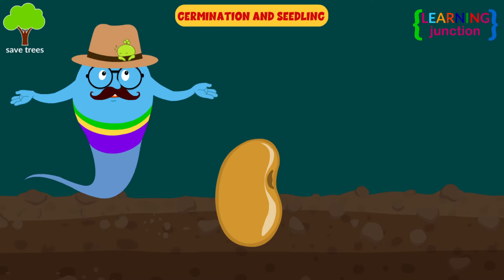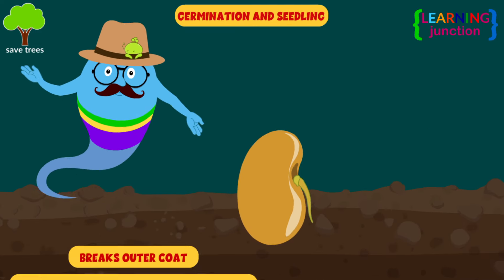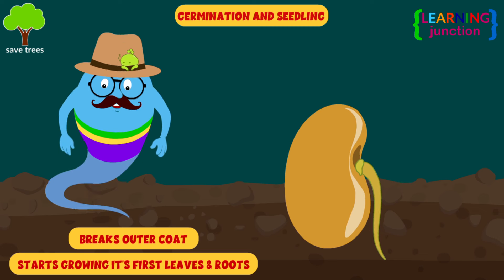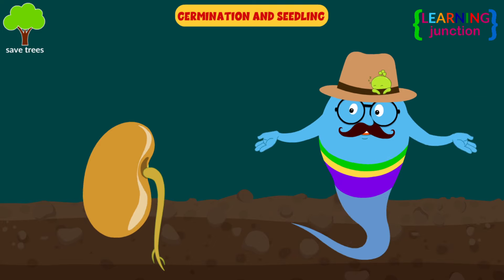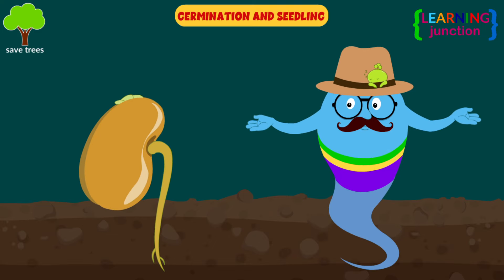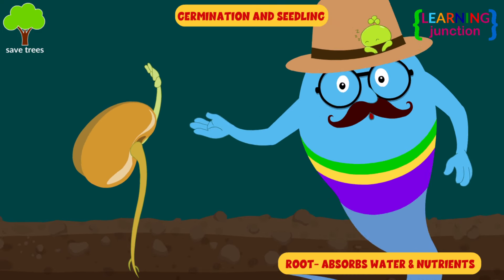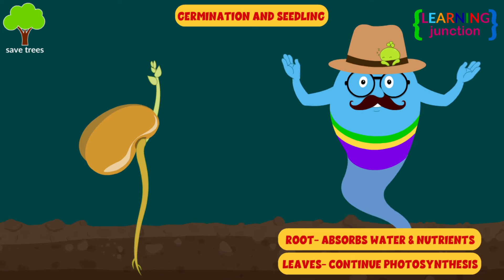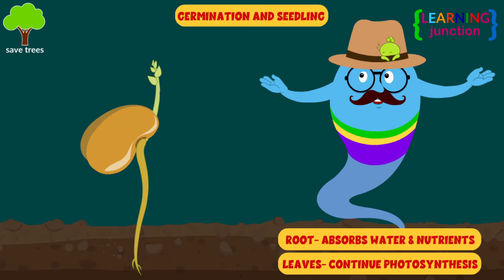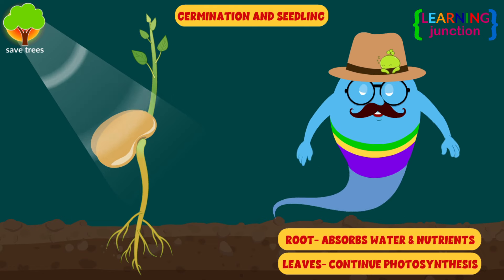Germination and seedling. The seed first breaks the outer coat and starts growing its first leaves and roots, called seedlings. When the leaves and roots develop, they start to function. The roots start their role of absorbing water and nutrients, while the leaves continue photosynthesis for food production.